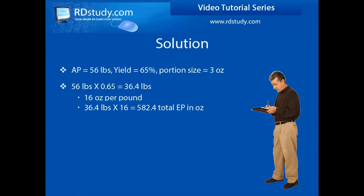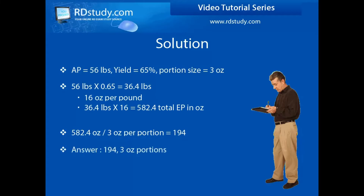Now that we have the total EP in ounces, let's solve for the number of portions. Simply divide the total EP by the portion size. 582.4 divided by 3 equals 194 three-ounce portions.